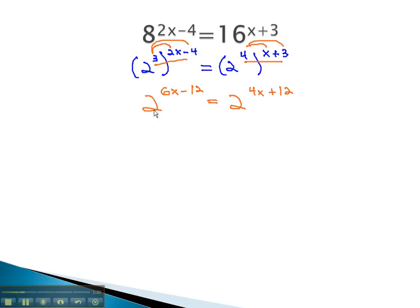Now, you'll notice that we've got the same base on both sides. When the bases are the same, we can set the exponents equal to each other. We can say 6x minus 12 is equal to 4x plus 12.